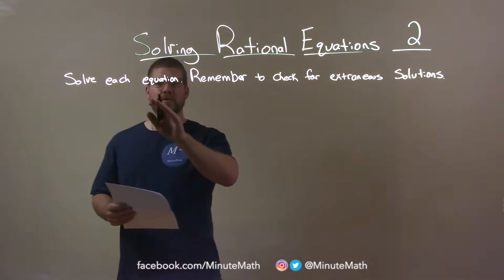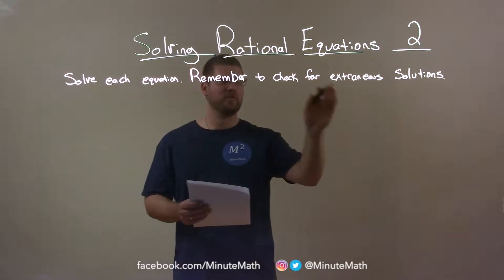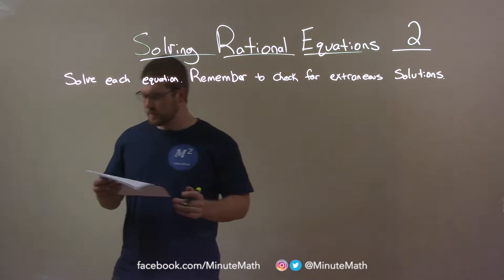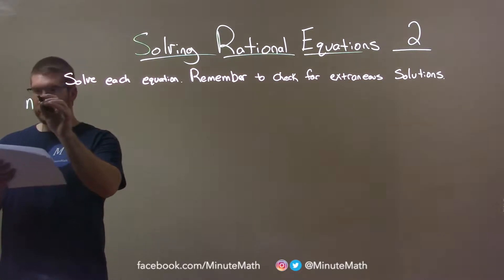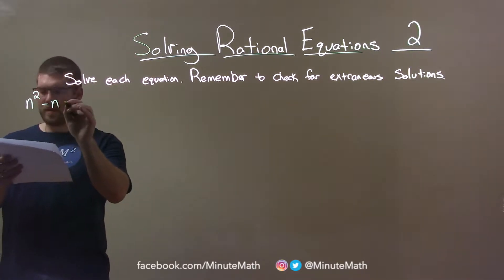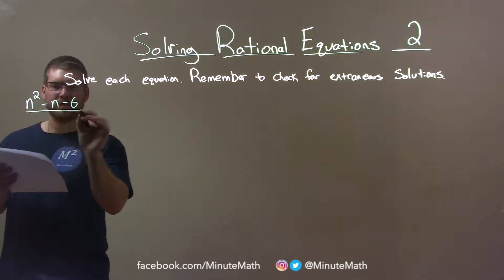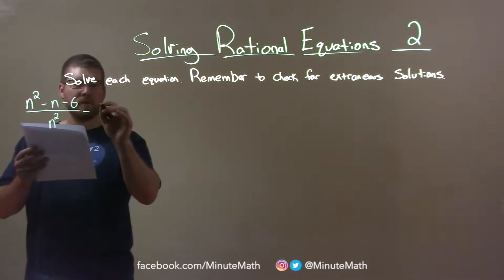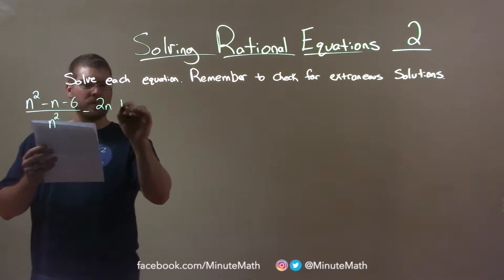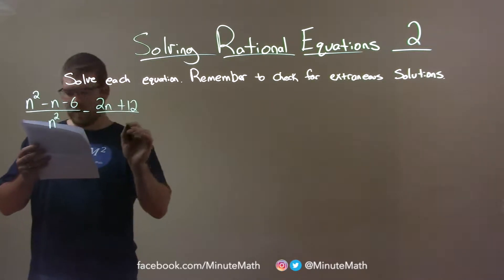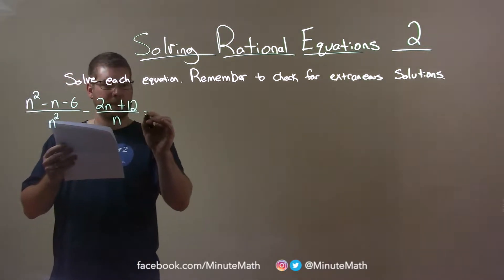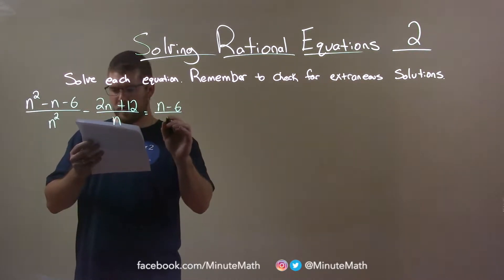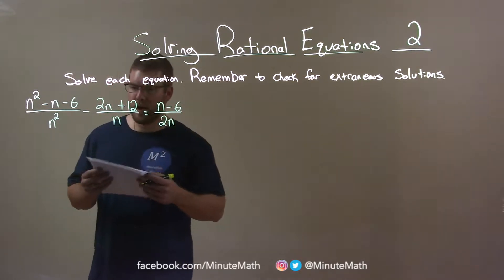I'm going to solve each equation, and remember to check for extraneous solutions. So, if I was given this problem: n squared minus n minus 6 over n squared, minus 2n plus 12 over n, is equal to n minus 6 over 2n.